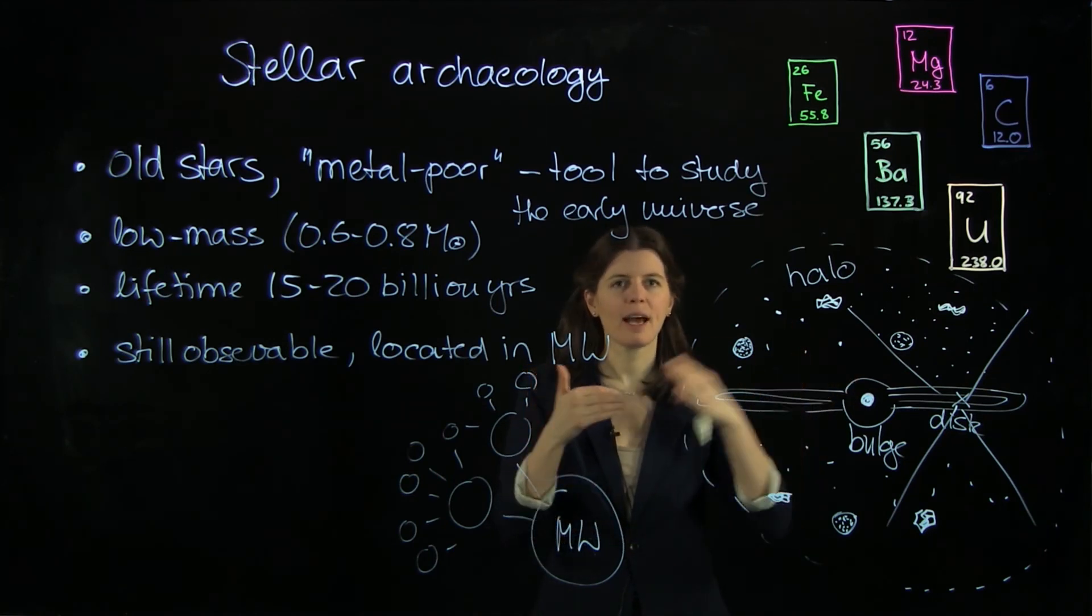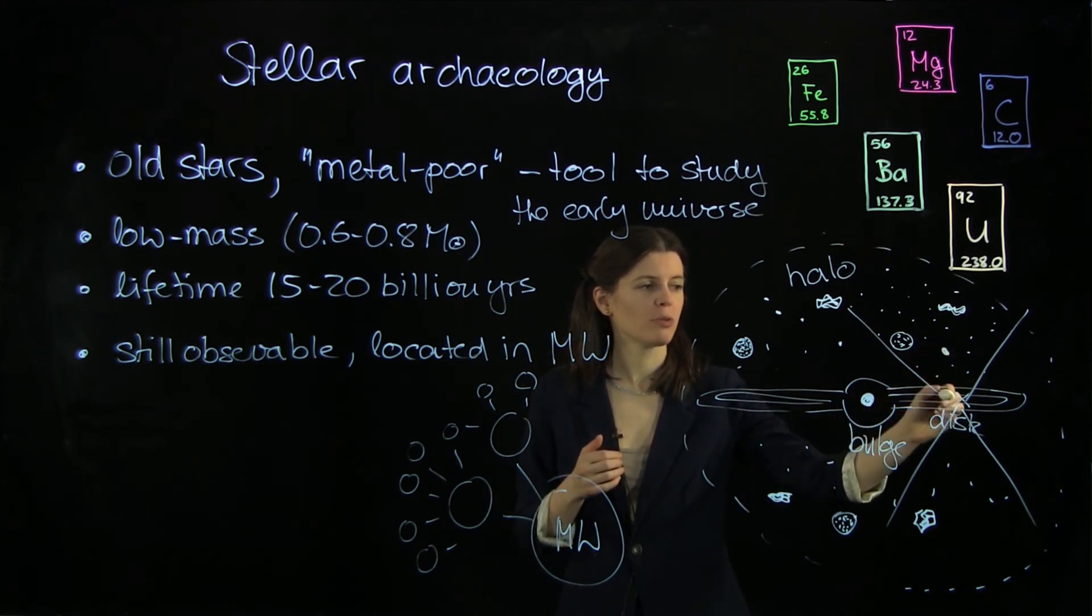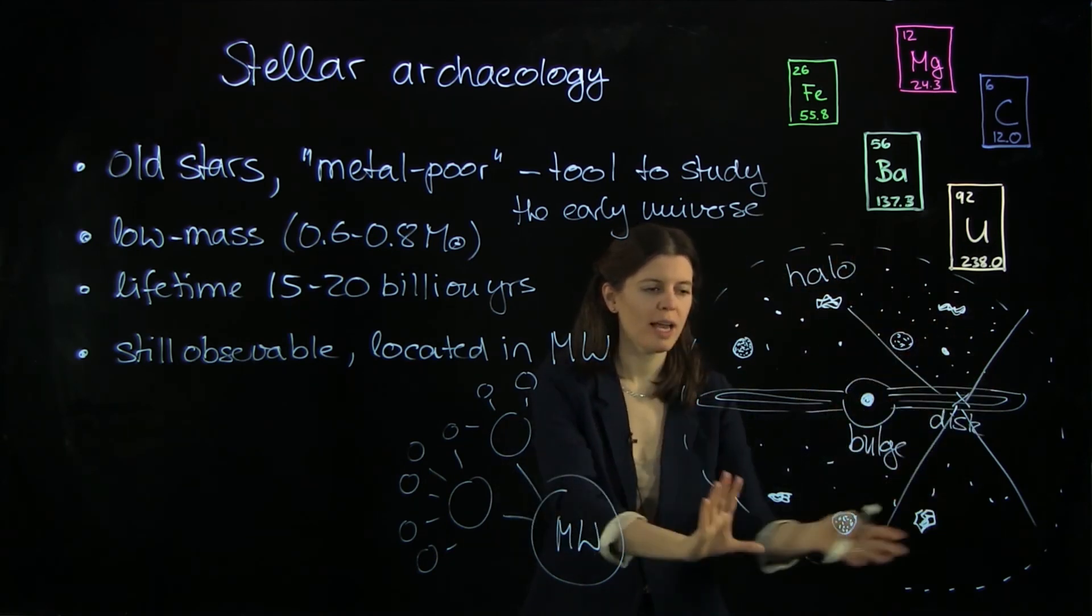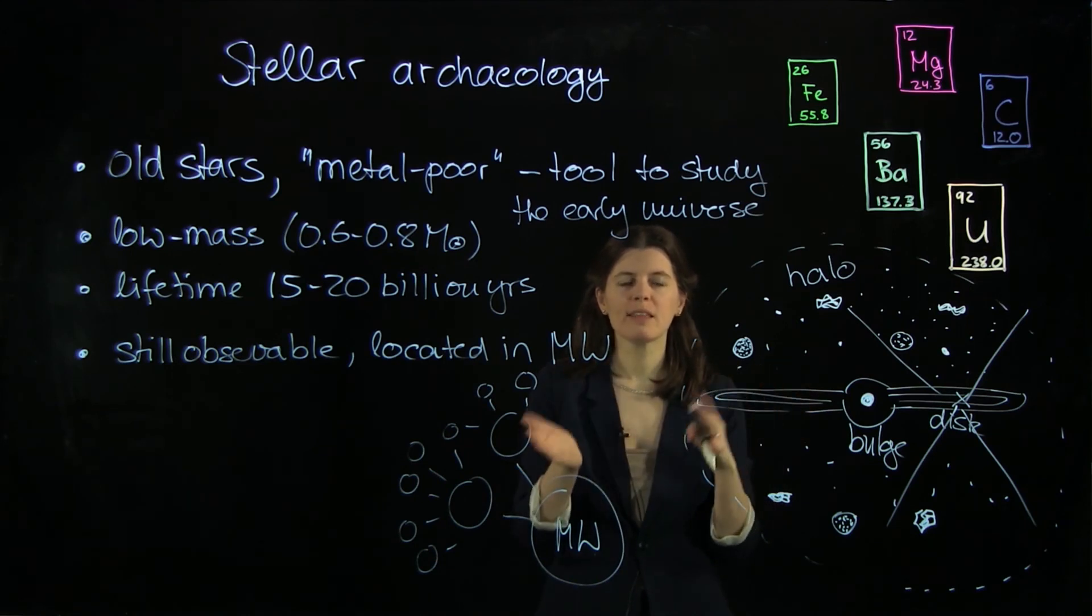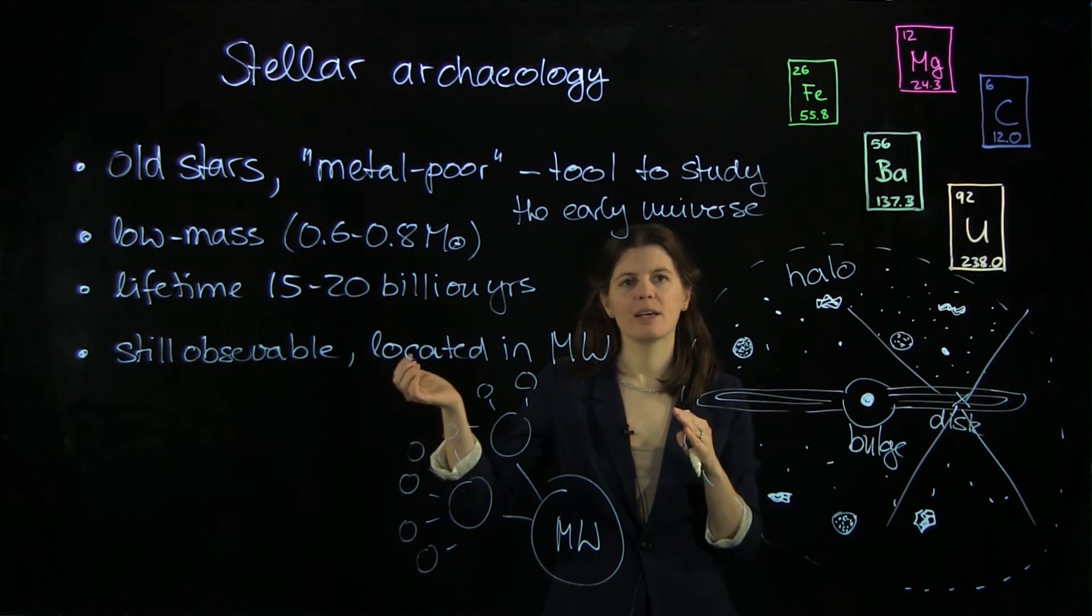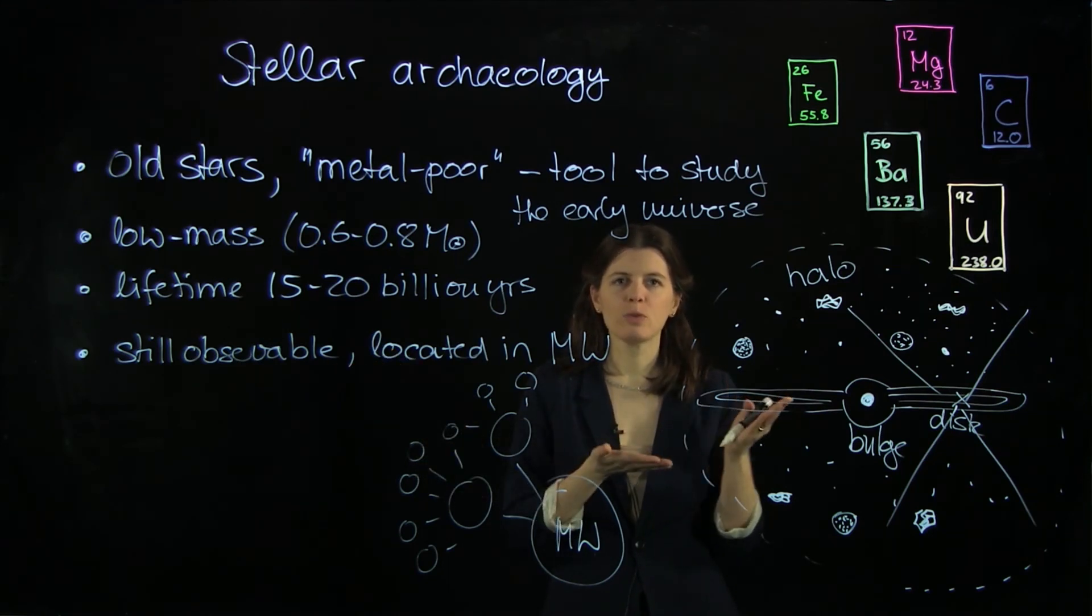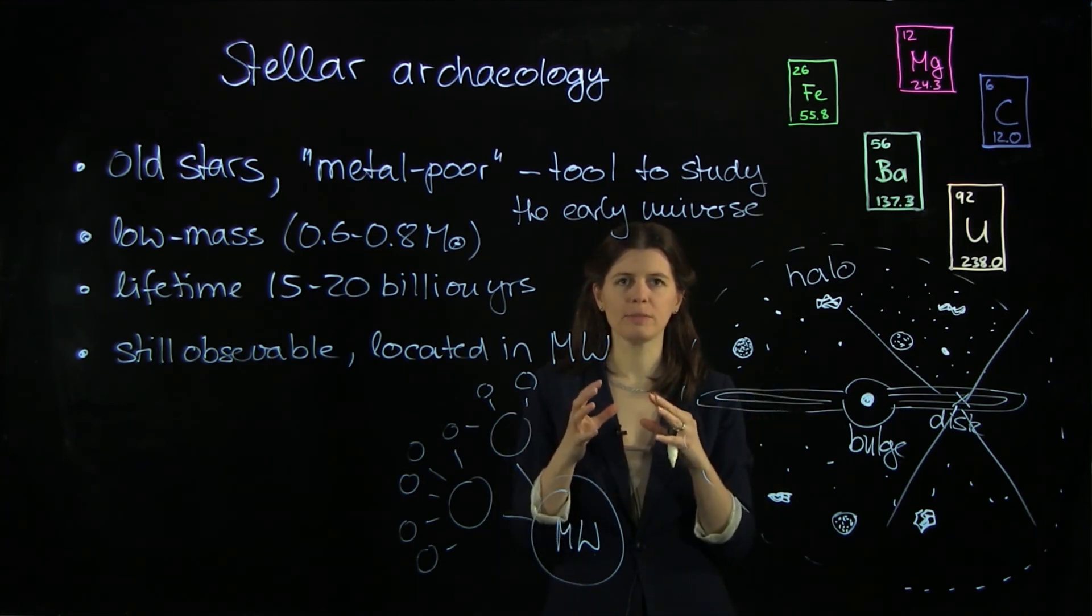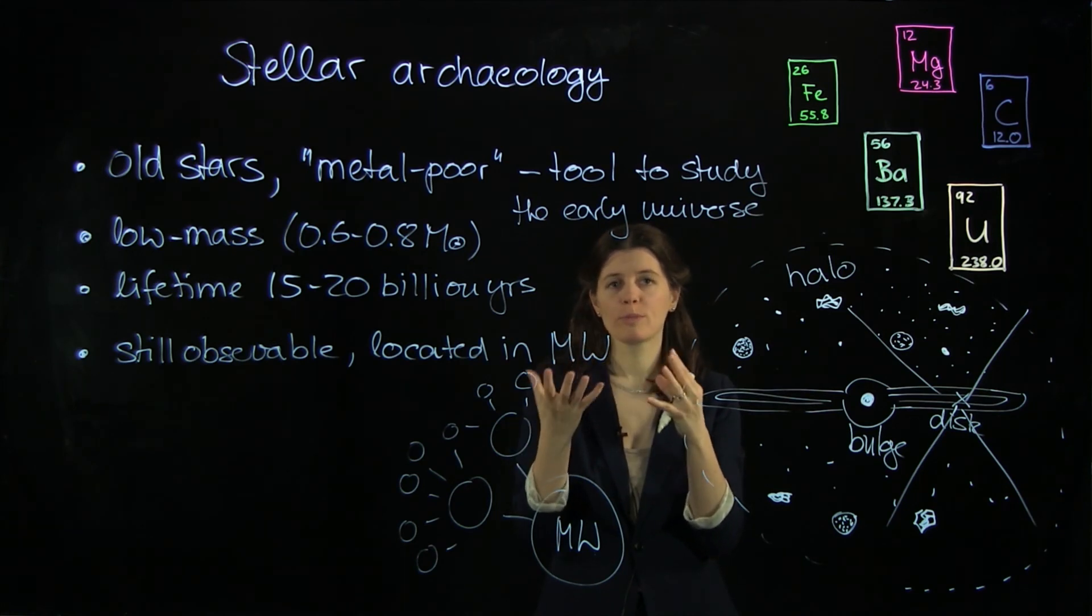Our metal-poor stars, their light hasn't traveled for a long time. It has traveled maybe just from here to us. That's a negligible amount of time, because these stars are today located in our Milky Way. But they are really old. We see them as when they are old, not as when they were young, as it's in the case of these distant galaxies. But the fact that we see them old doesn't matter to us, because these stars don't get wrinkly or anything. They just sit there, and they're just waiting for us to observe them.